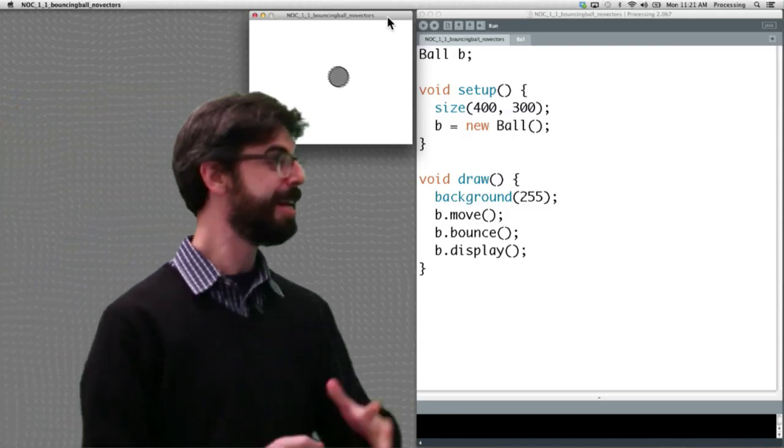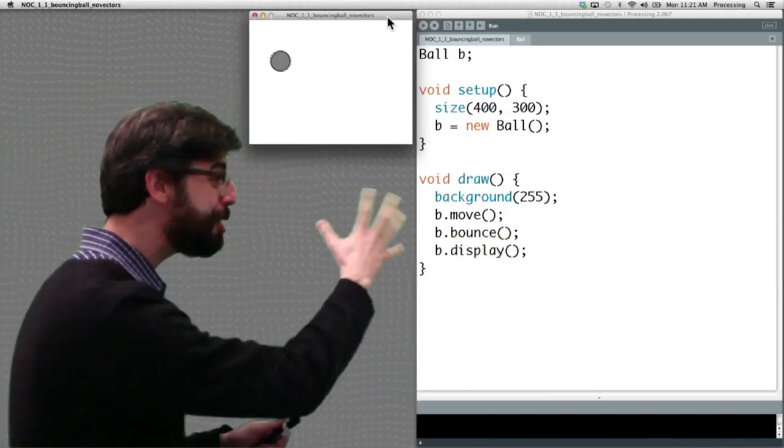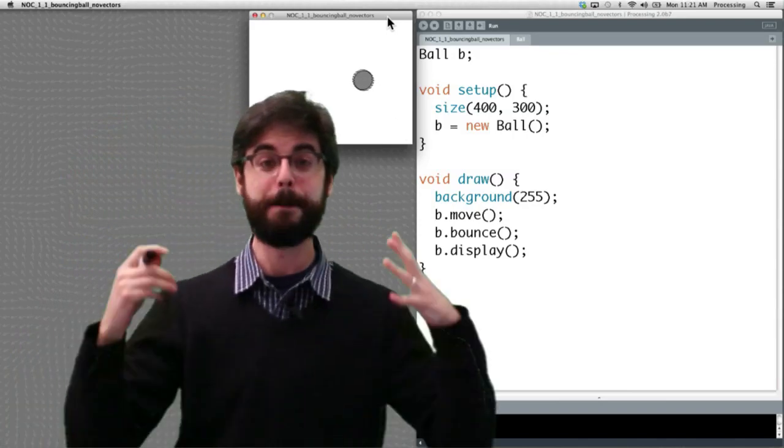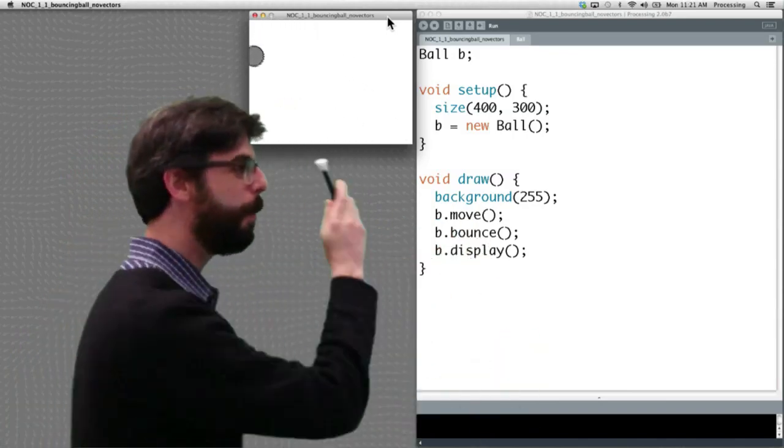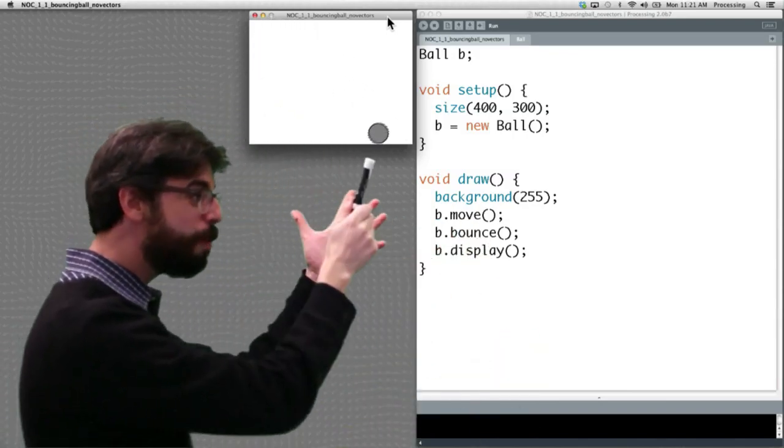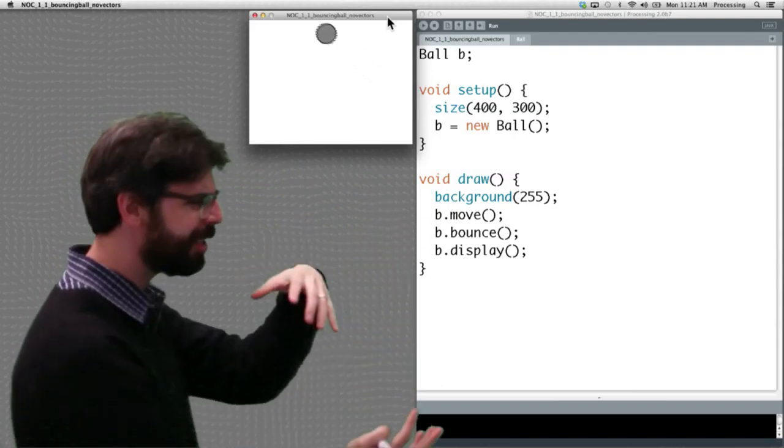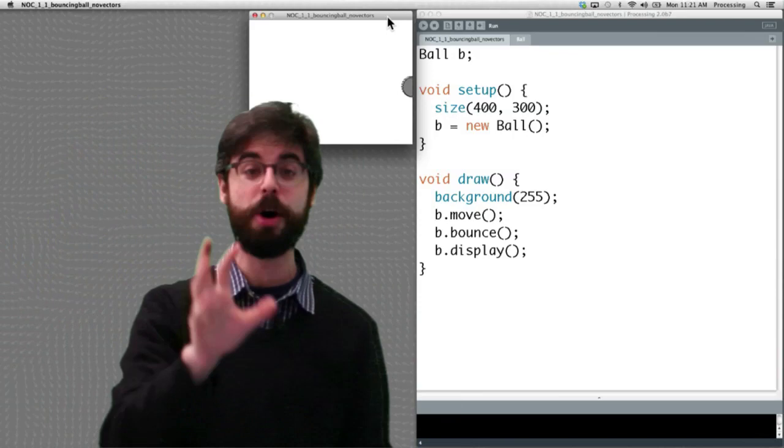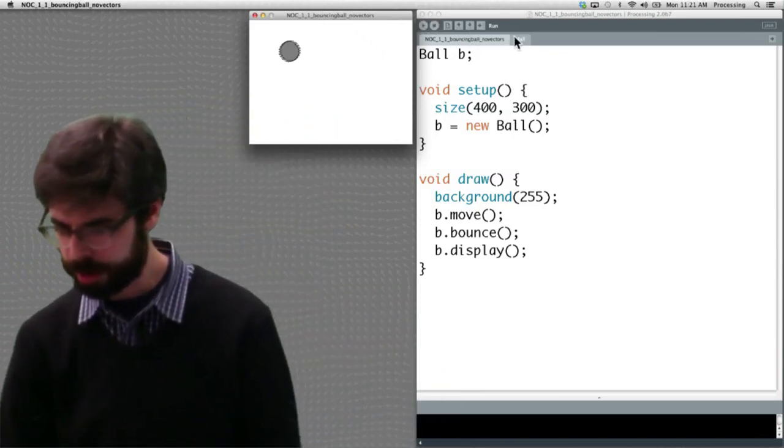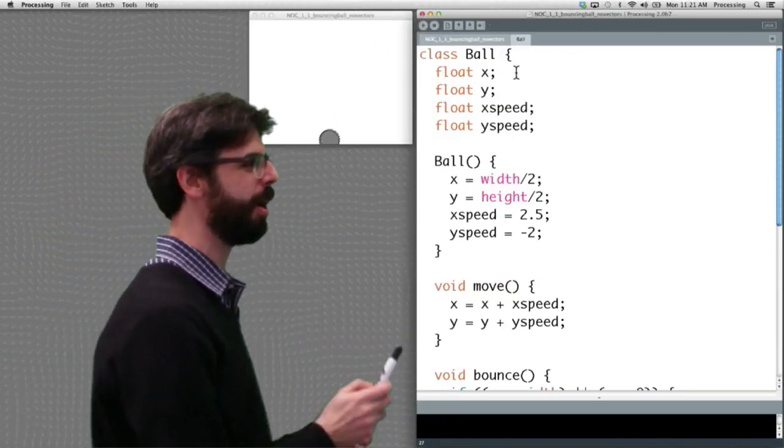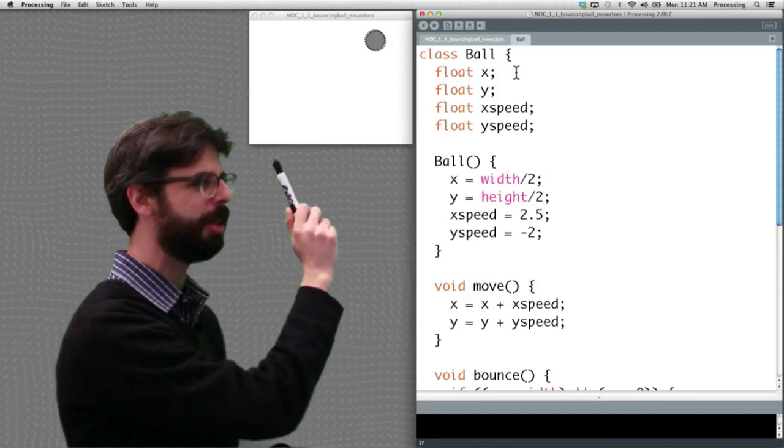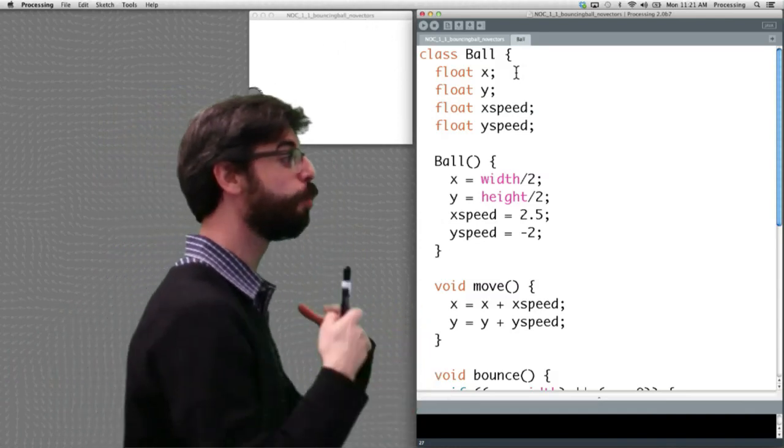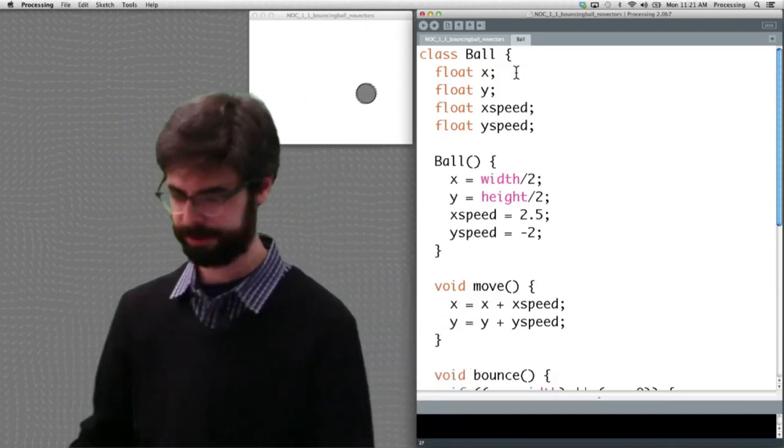OK. Here we have your kind of standard Processing example. You have a bouncing ball sketch. You have a ball object b. You make a new ball. b moves. It bounces. It displays. This is your basic stuff that we're used to. But let's actually now switch over to the ball tab. This is where things matter.